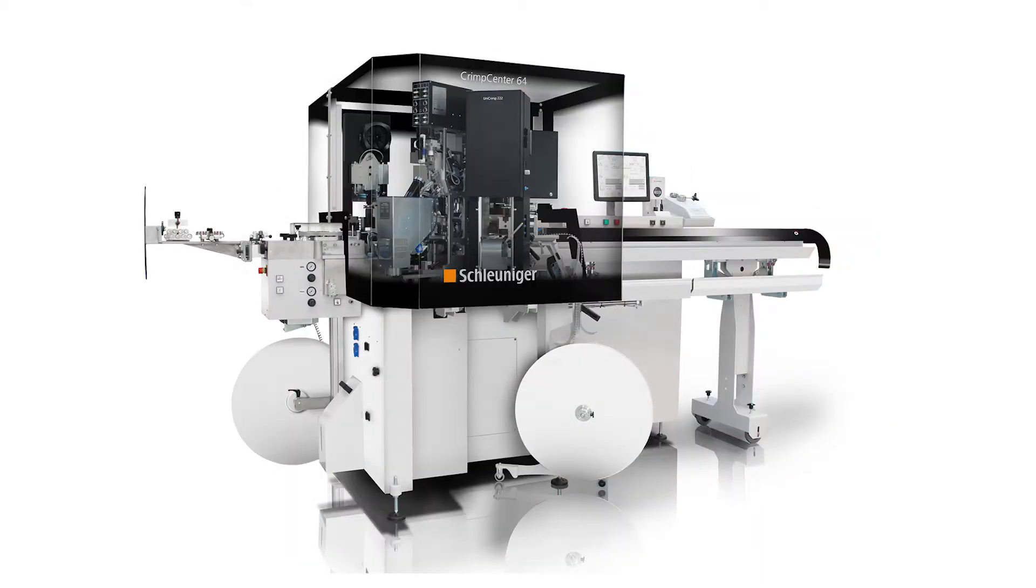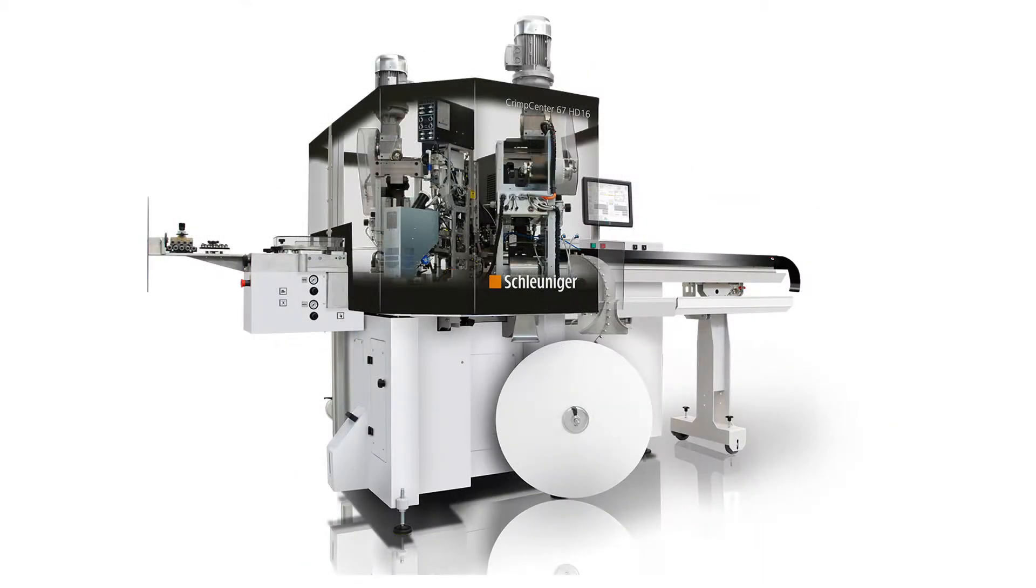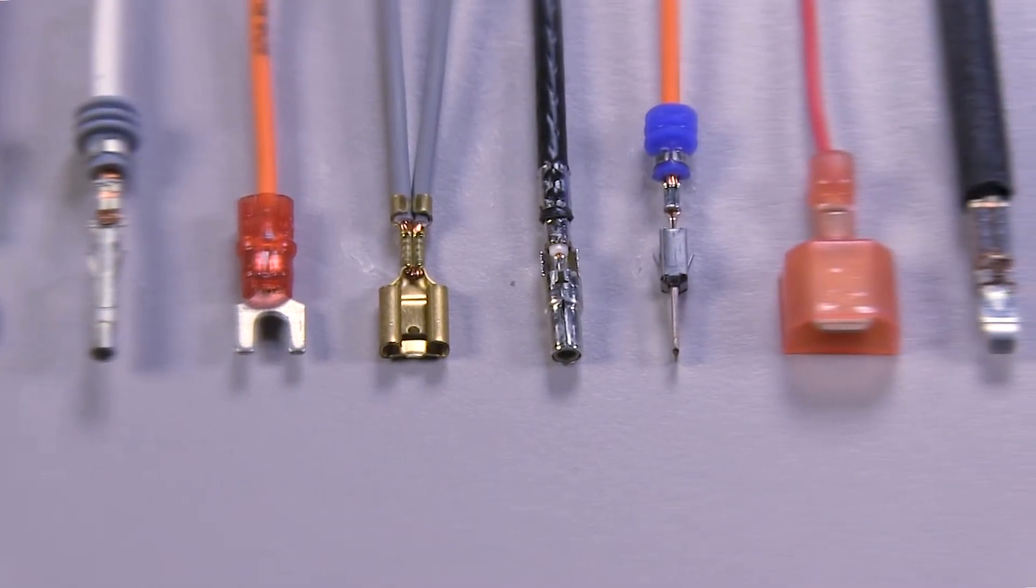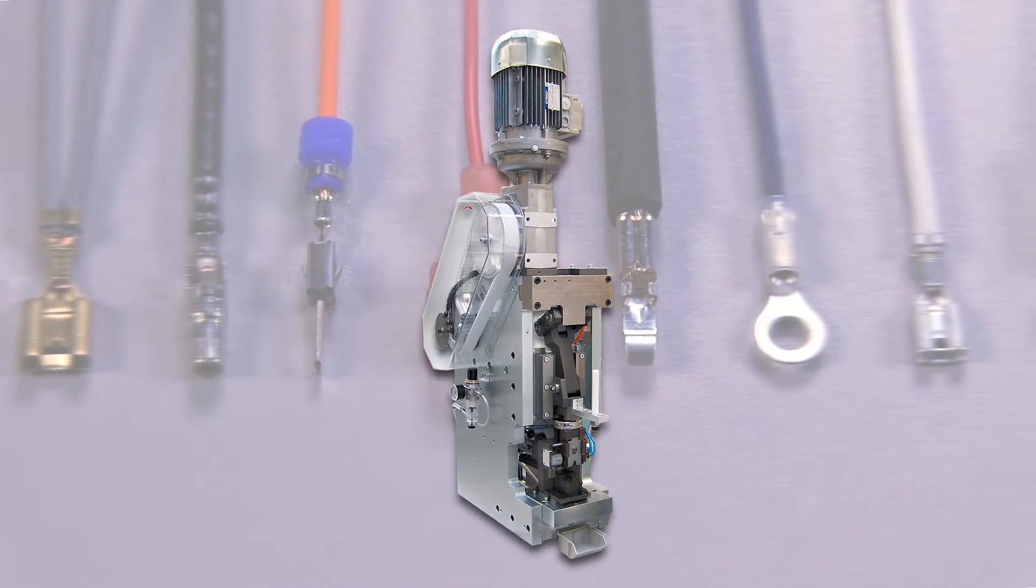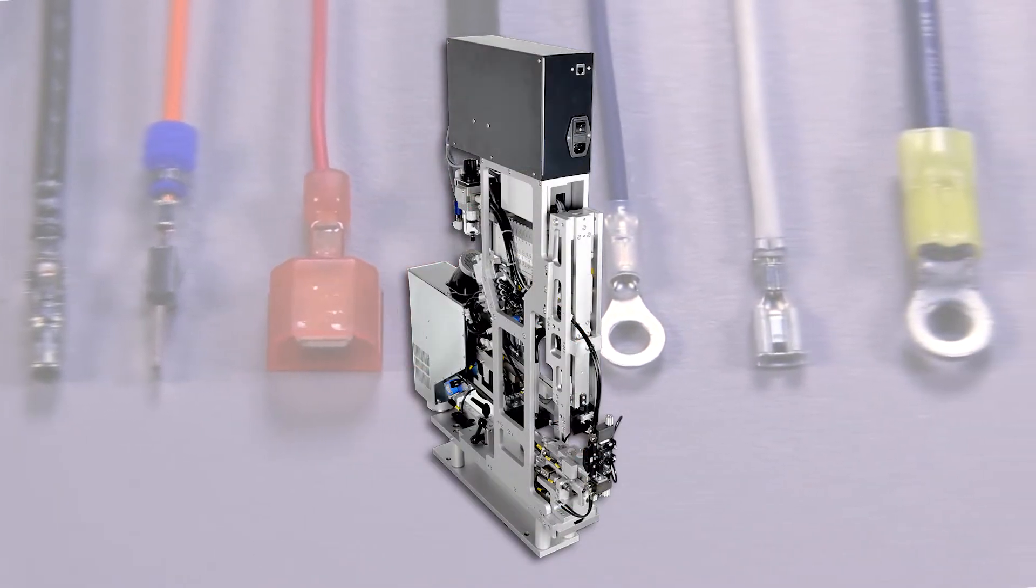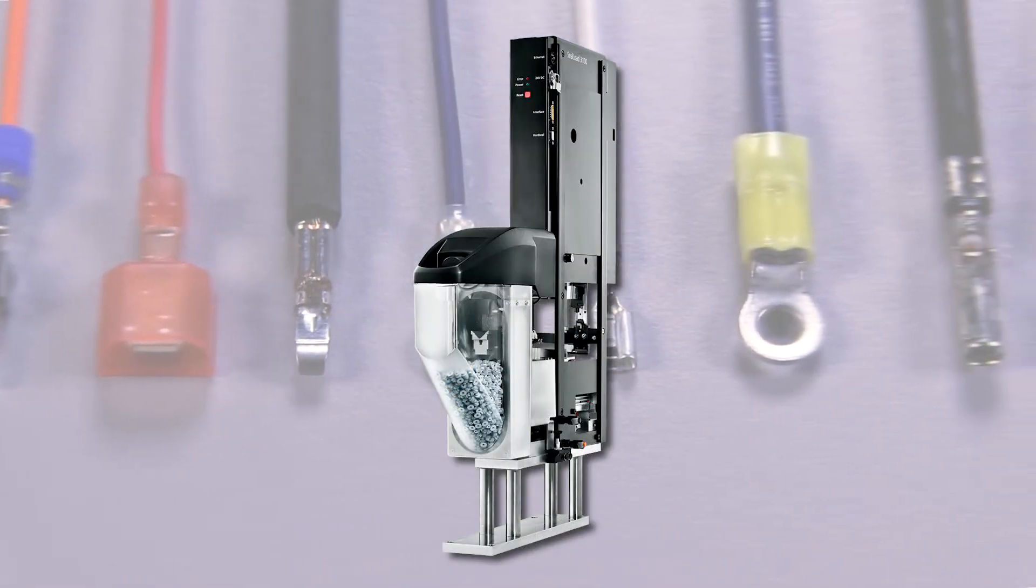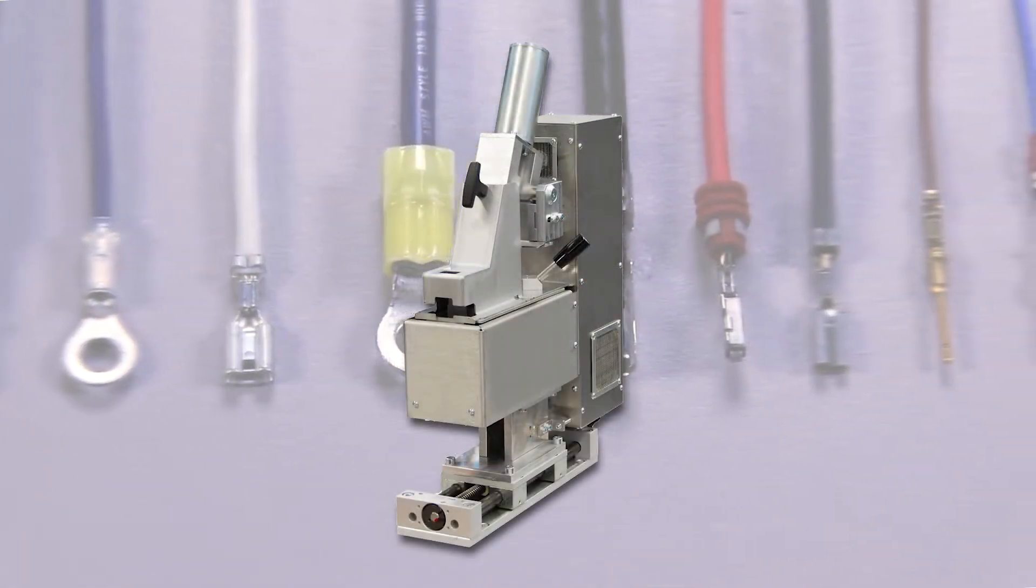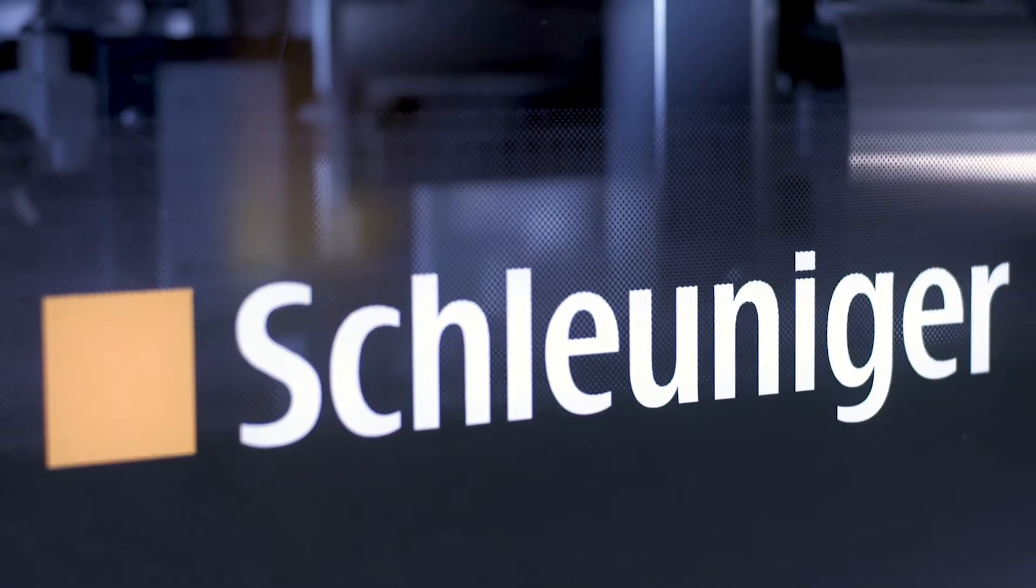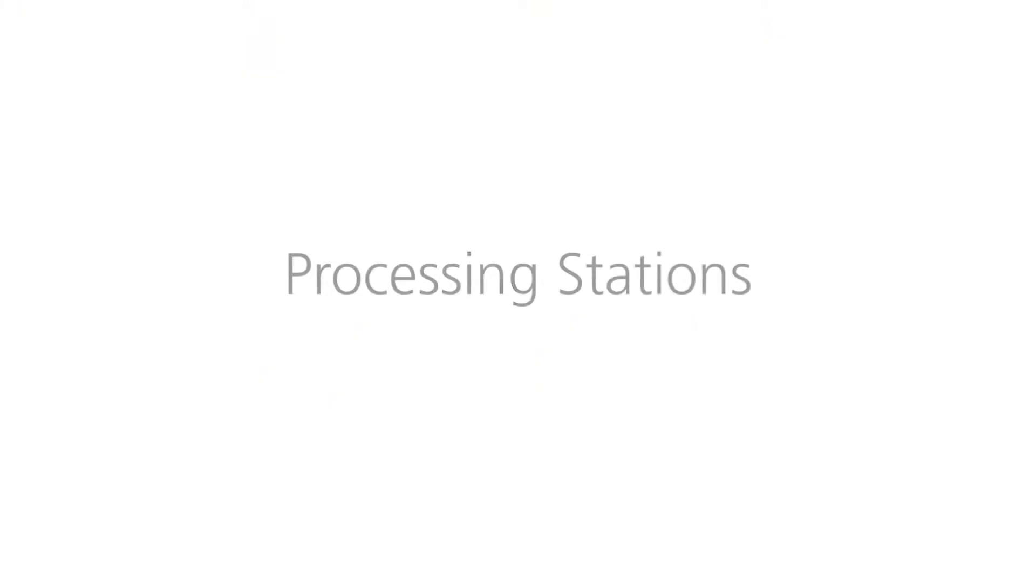Schleuniger's Crimp Center Series fully automatic crimping machines are the ideal solution for high-speed wire processing. At the heart of each Crimp Center machine are the processing stations, which allow customers to tailor their machine for specific application needs. Schleuniger offers a full range of processing stations designed for nearly every application.